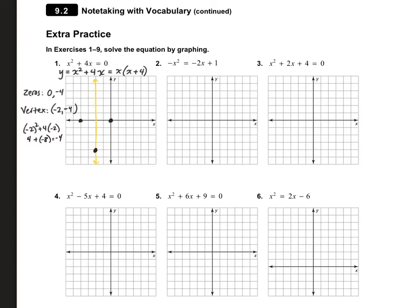So now I'm ready to go ahead and put all these points together in a nice U-shape parabola. Now we need to look and see what the question is asking. The question asks, when is x squared plus 4x equal to 0? We can see that it equals 0 at this spot here and this spot here. So my answer is x is equal to negative 4 and 0.